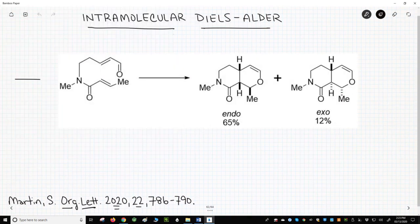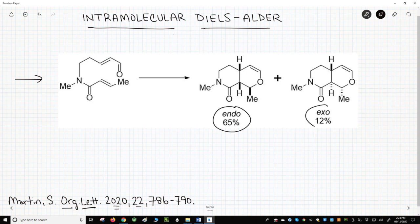Here is the key Diels-Alder reaction. It forms a mixture of the endo and exo products. Before covering stereochemistry, I'll highlight two ideas.